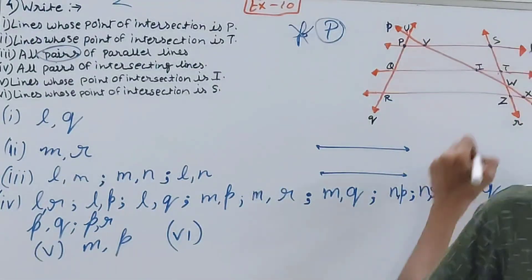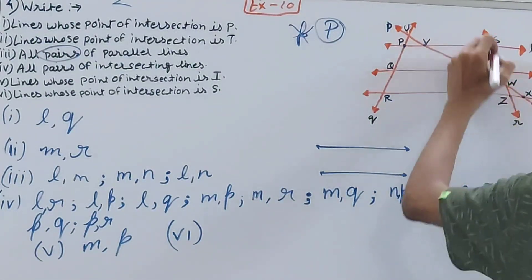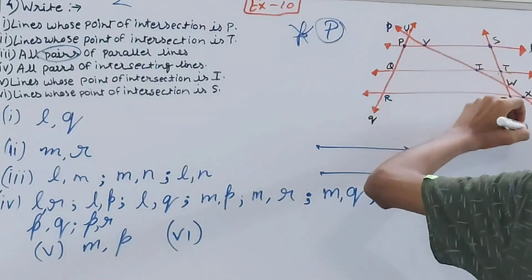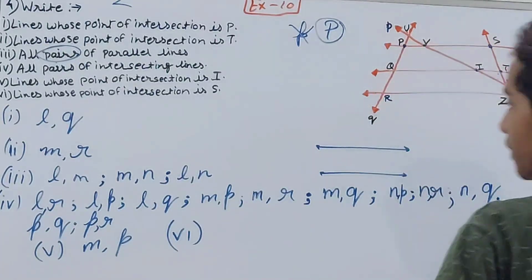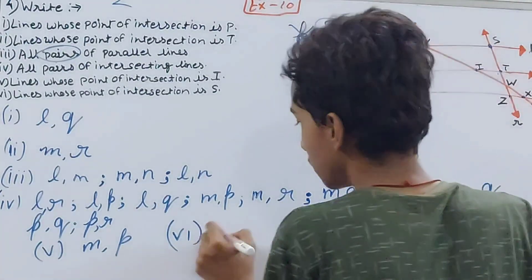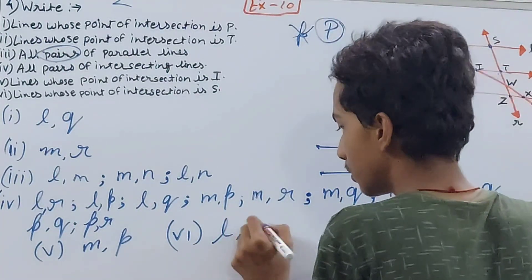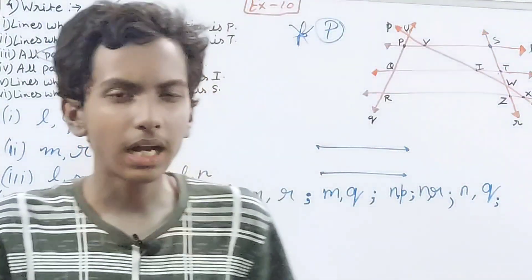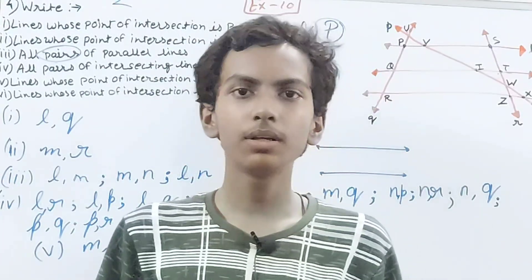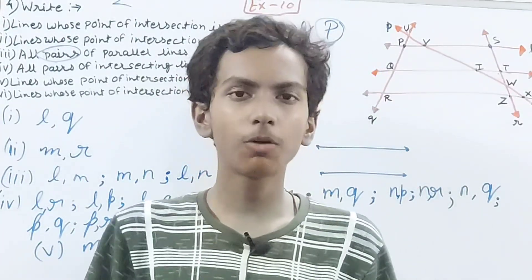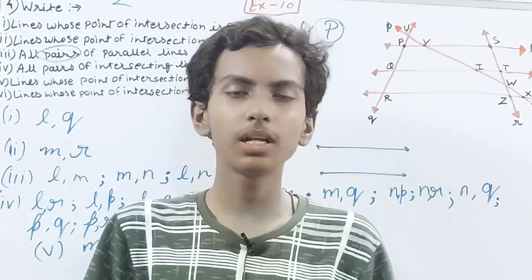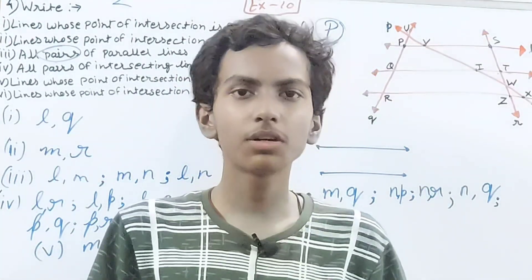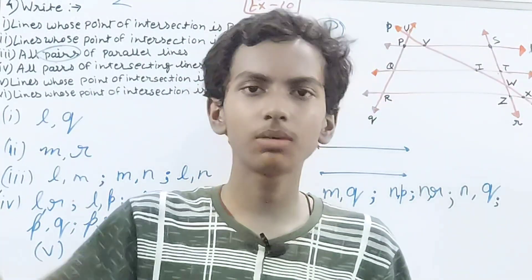For part six, lines whose point of intersection is S: at point S we can see lines l and r intersecting. That completes all the questions. If you enjoyed this video, please subscribe to the channel, and take good care of yourselves.